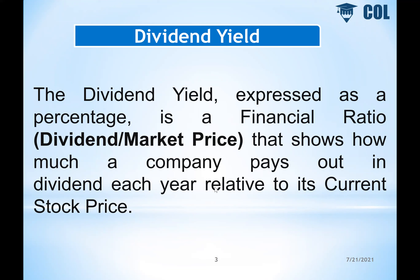How much a company pays out relative to the market price? For example, if the company has a 50% dividend and the market price results in 100%, the dividend yield is definitely 15% of the yield. When the company pays out relative to the market price, it is definitely 15% of the dividend yield.